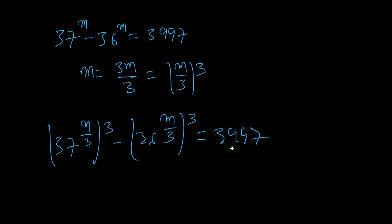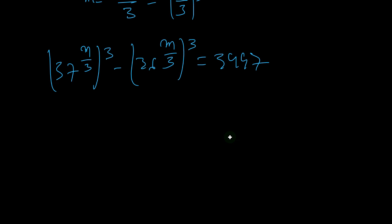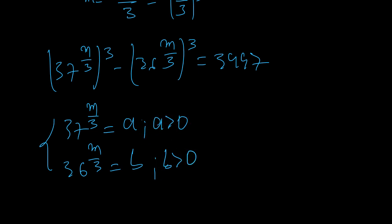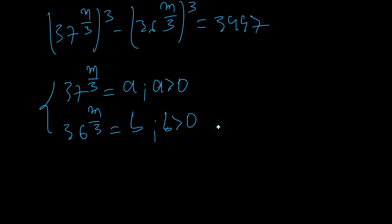That equals 3997. To simplify, I'm going to make a substitution. I'm going to say 37 to the m over 3 equals a, and 36 to the m over 3 equals b. We know these numbers are greater than zero, so a is greater than zero and b is greater than zero.